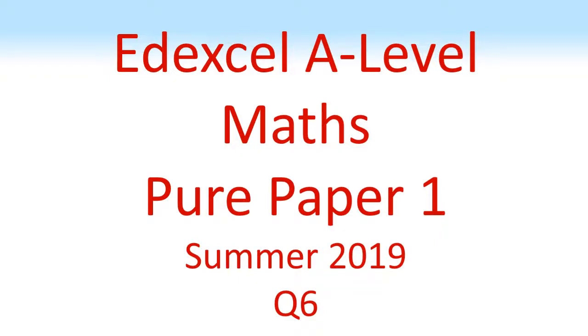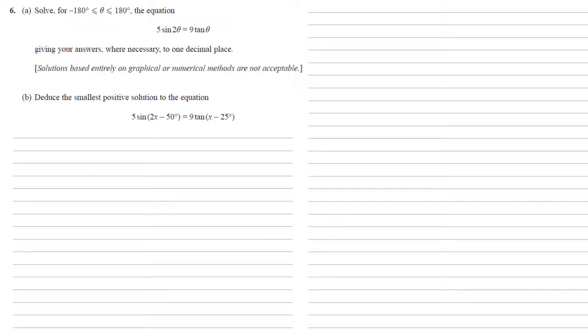Edexcel A-Level Maths, Pure Paper 1, Summer 2019, Question 6. We need to solve for theta between minus 180 degrees and positive 180 degrees, the equation 5 sine 2 theta equals 9 tan theta, giving our answers to one decimal place.